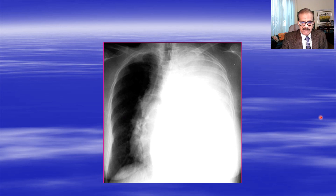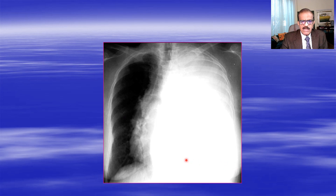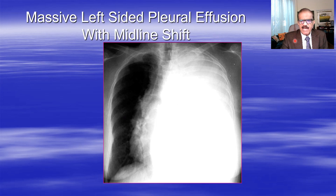This next case is even bigger. You do not have that characteristic upper border because this whole hemithorax is full of fluid, but it definitely is a pleural effusion. You can see obliteration of all angles, diaphragm, and heart borders. There is a very significant shift of the heart toward the right side. This is likely to be malignant because these big effusions covering the whole hemithorax are most likely malignant. The trachea is also deviated to the right - so it's a massive left-sided effusion with midline shift.